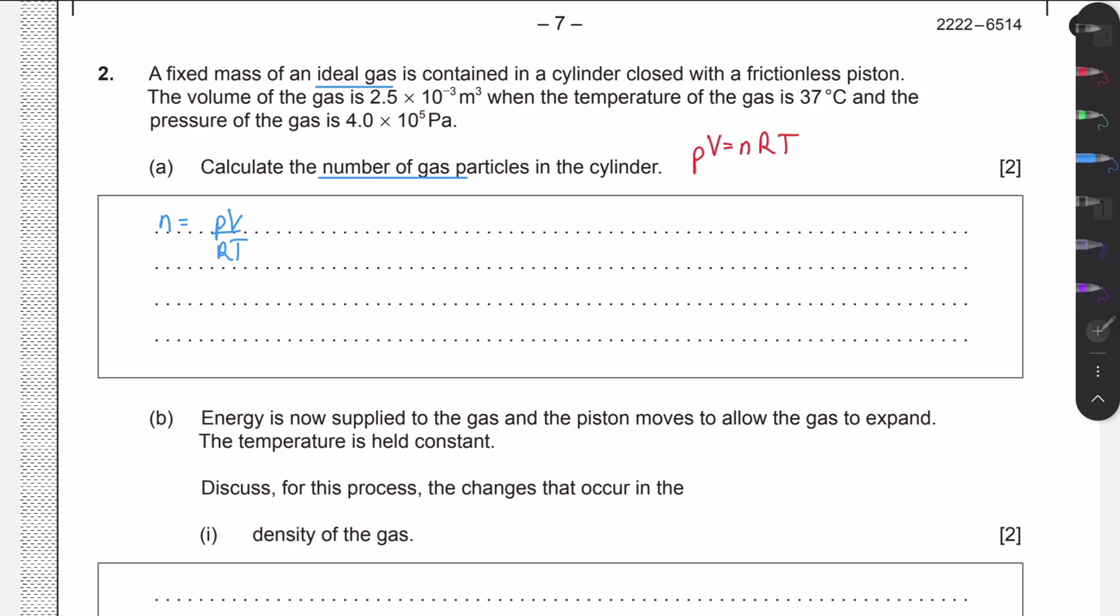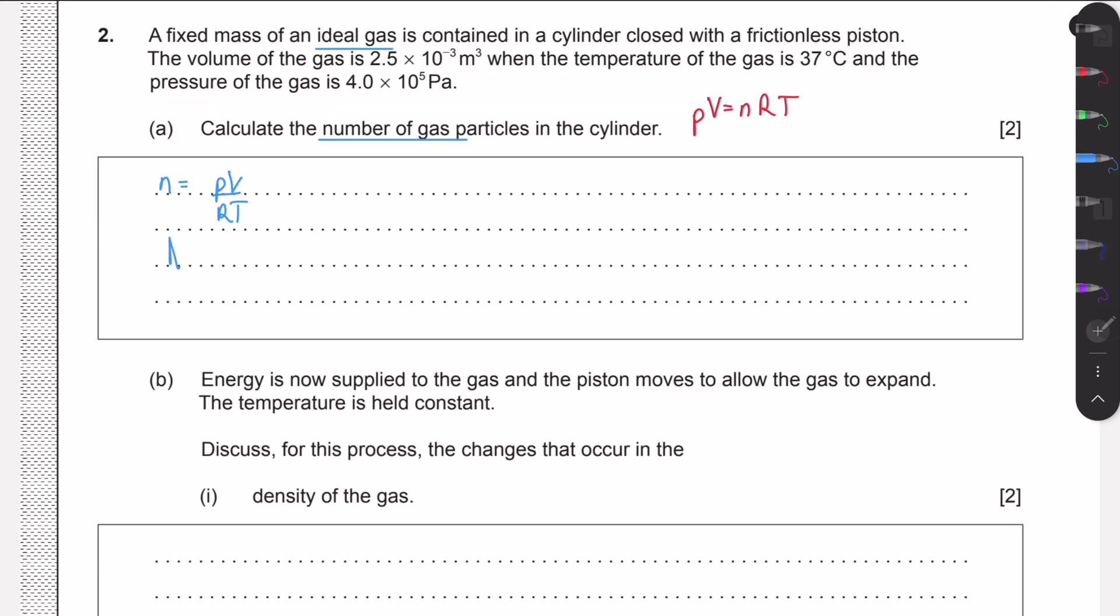Avogadro's number tells us that in one mole there's 6.02 times 10 to the 23 particles. So if we calculate the number of moles and multiply by Avogadro's number, we'll find the number of particles. The number of particles is 6.02 times 10 to the 23 times n, which is PV divided by RT. All we need to do is plug everything in.